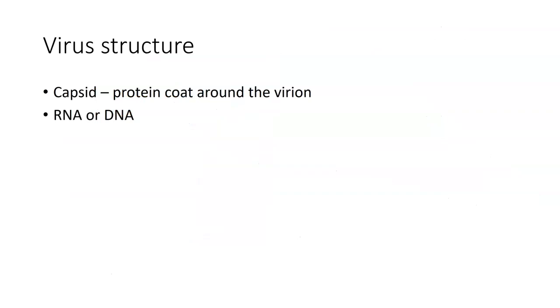Viruses have either RNA or DNA. They don't have both. They have one or the other. The RNA or DNA could be single-stranded or could be double-stranded, which means that these are a little bit different than what you normally find as far as regular organisms.